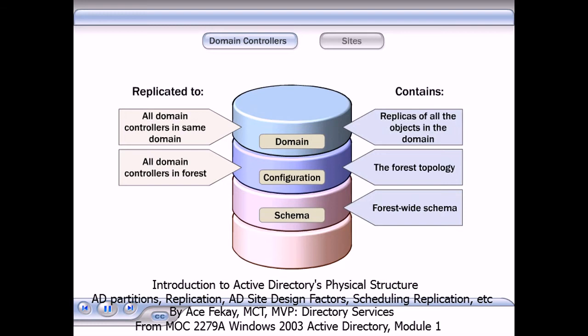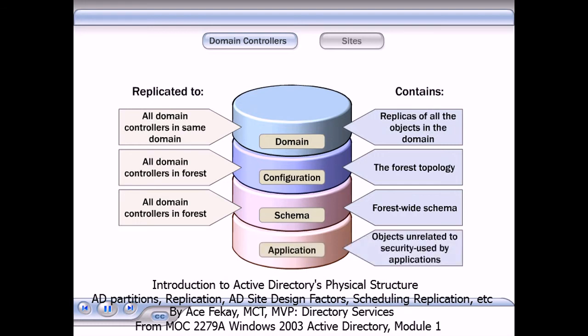The configuration and schema partitions are replicated to each domain controller in the forest. Optional application partitions contain objects that are unrelated to security and that are used by one or more applications. Application partitions are replicated to specified domain controllers in the forest.